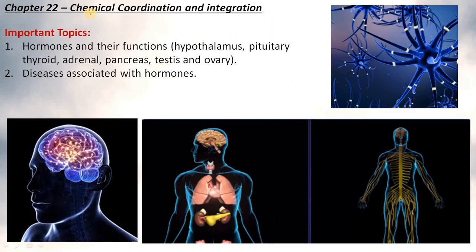The last and most important chapter is hormones along with their function: hypothalamus, pituitary thyroid, adrenal, pancreas, testis and ovary. The diseases associated with hormones need to be remembered.